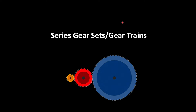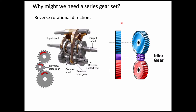Let's talk about series gear sets and gear trains first. Here we have a simple image of three spur gears in series. Why might we need a series gear set? One reason is to reverse rotational direction. For example, in automotive manual transmissions, we have a reverse idler gear that slides in between gears on the output shaft and the countershaft. This additional gear changes the direction but does not change the speed ratio between the input and output gears.